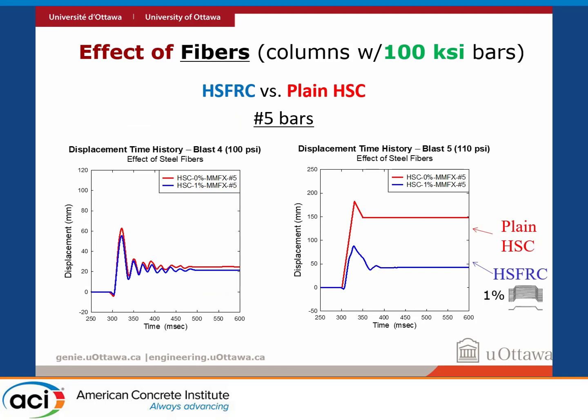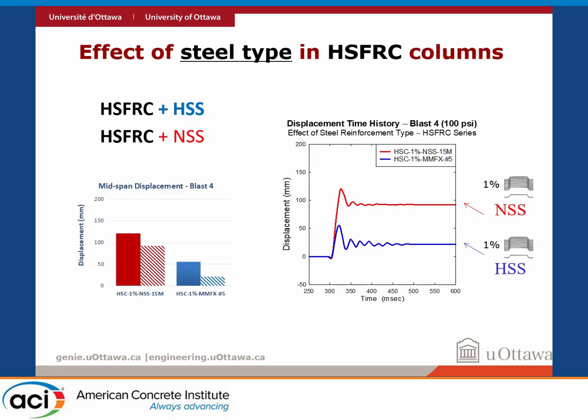Looking at the effect of fibers in columns with high-strength bars: in the early shots, the column is behaving almost elastically, so the one without fiber and with fiber look very similar. But when the column fails, that's when the fibers kick in — they prevent major damage and you get a more controlled failure. We also compared fiber-reinforced concrete columns with normal-strength bars versus high-strength bars, showing that the benefits of high-strength bars carry over into fiber-reinforced concrete columns as well — you get reduced maximum and residual displacement.